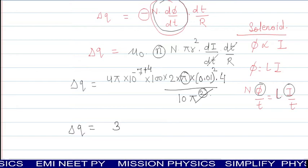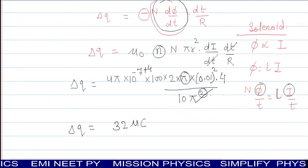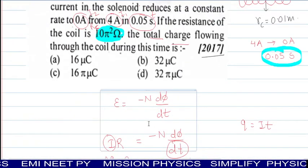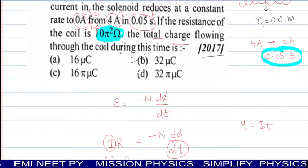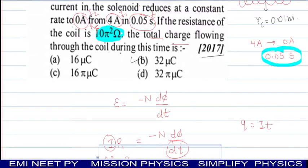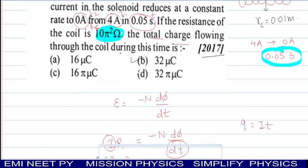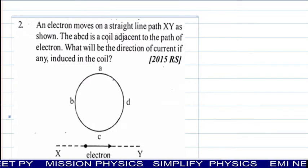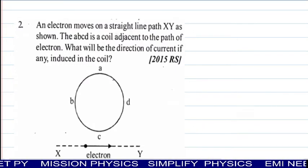Then we can solve the data. You will get del Q answer as 32 micro coulomb. Check in the options - this is option number B. All calculation you will take minimum time.